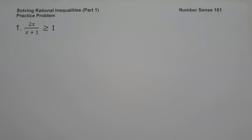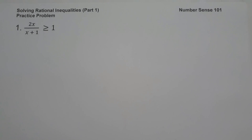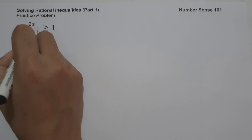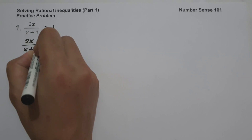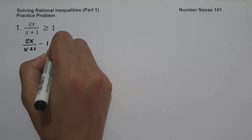In today's video, we are going to have a practice problem on how to solve rational inequalities, and we are going to explain everything in detail. On the first example, we have 2x over x plus 1 greater than or equal to 1. The first step is to move 1 to the other side of the inequality and rewrite the inequality as a single rational expression: 2x over x plus 1 minus 1 greater than or equal to 0.